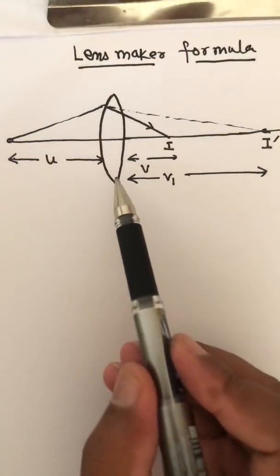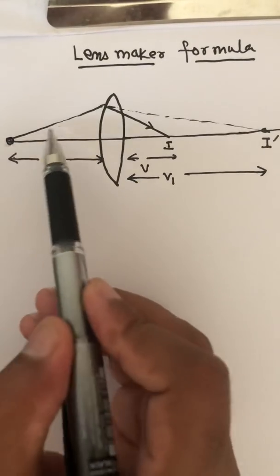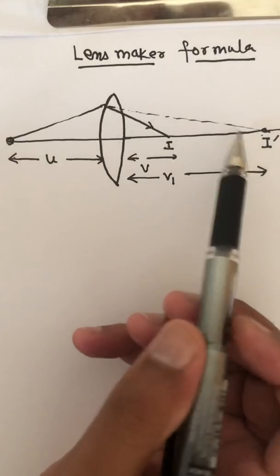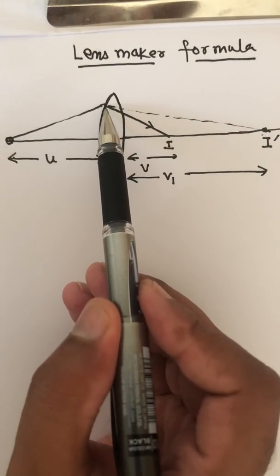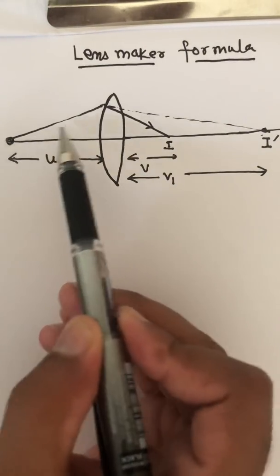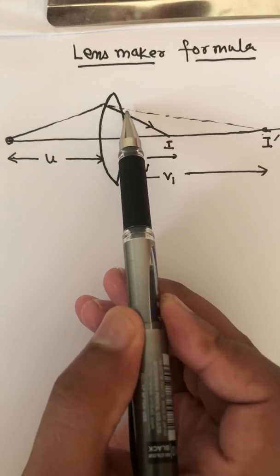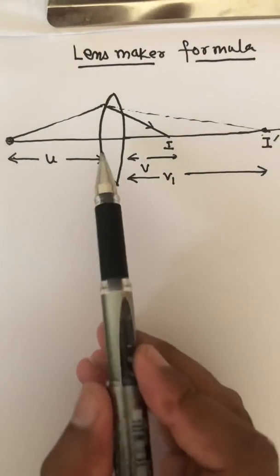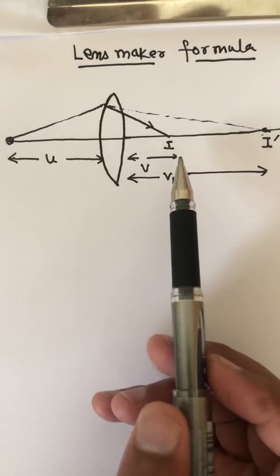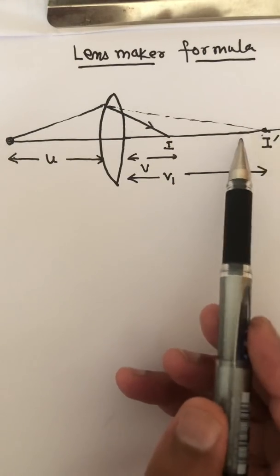Lens maker formula: for one convex lens, at distance u there is one object. If we consider refraction only on the first surface, image will form at distance v1. The image formed by the first refraction works as an object for the second refraction. The intermediate image at i-dash is just a process to solve the question — we cannot see that intermediate image.